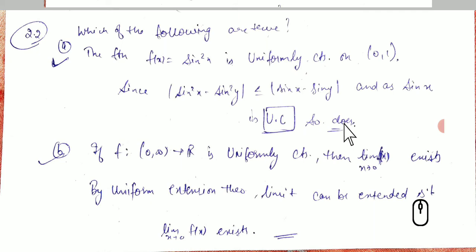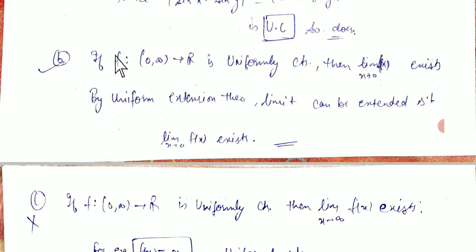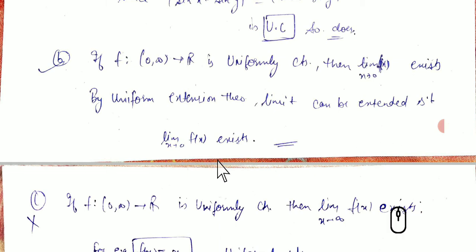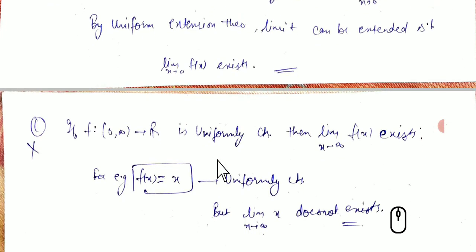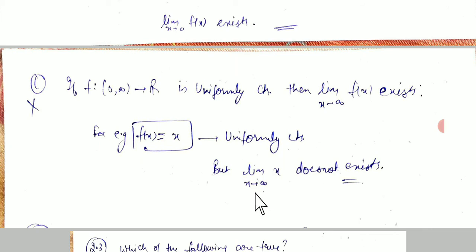For the second option: if f is a function from (0,∞) to ℝ and is uniformly continuous, then by the uniform extension theorem, the limit as x tends to 0 of f(x) exists. For the third statement: if f is uniformly continuous on (0,∞) to ℝ, we cannot say the limit as x tends to infinity exists — for example, f(x) = x is uniformly continuous but the limit doesn't exist.